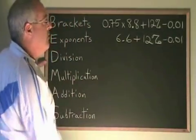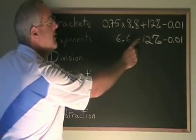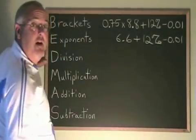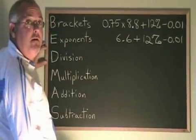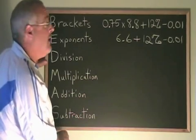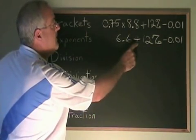The next operation we will do is this one because we have an addition and a subtraction. They are in a tie and the tiebreaker is which one do you get to first when you read from left to right. This one comes first.